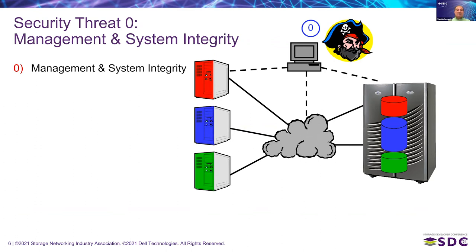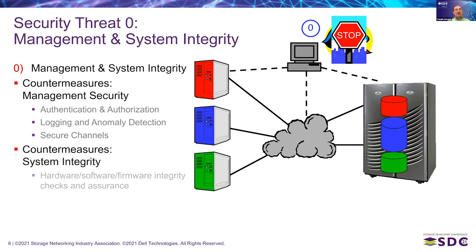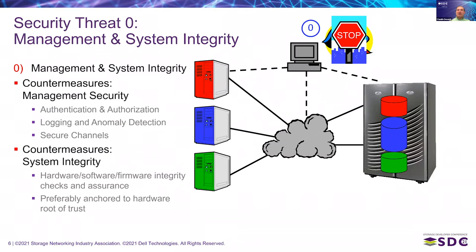Security threat zero: access to the management console. There are fairly standard countermeasures, because this is not a problem specific to a SAN — it is present in every system. If an attacker is able to access your control system, they get full access. Management security countermeasures include: authenticated and authorized access, logging of every activity, anomaly detection techniques, and securing all channels enabled to access the management console.